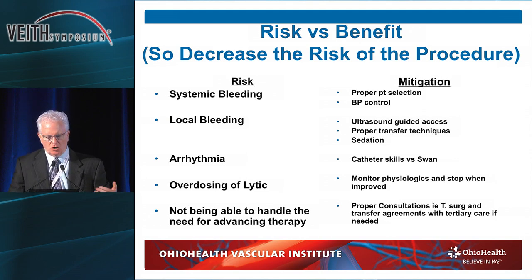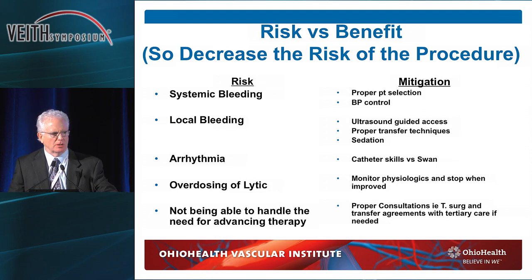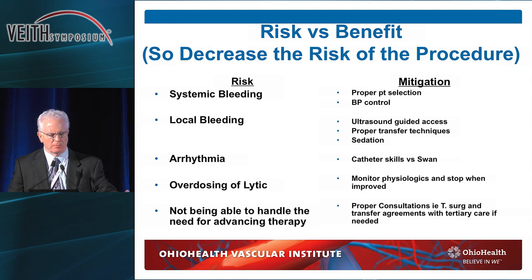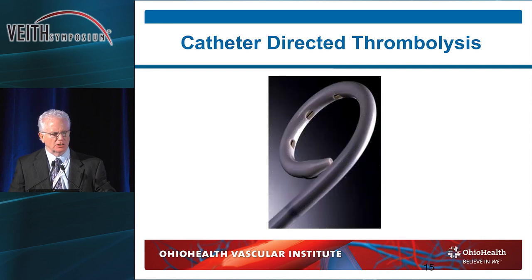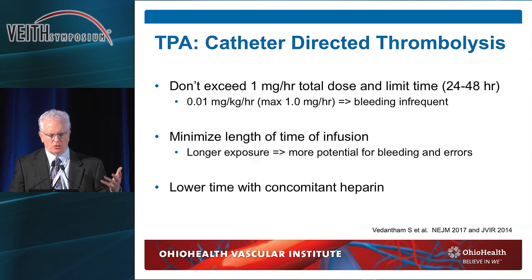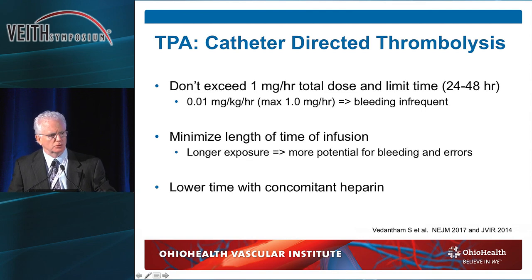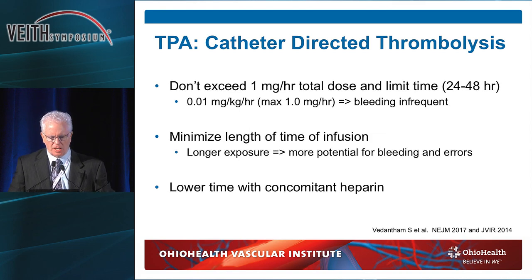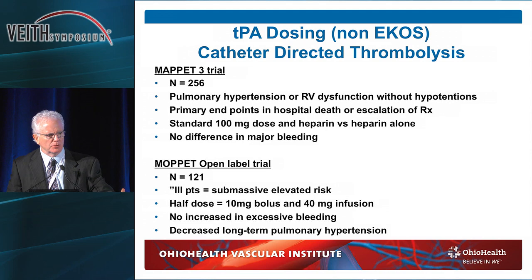If you get a patient who is massively ill and you give them systemic thrombolysis but don't have the ability to do other stuff, get them out of your hospital to a tertiary care center with thoracic surgery or thrombectomy capability. For catheter-directed thrombolysis, we usually don't want to exceed one milligram per hour. Minimize the length of infusion — longer exposures and higher dose lead to increased bleeding and medical errors. With concomitant full-dose heparin therapy, you really want to back off your infusion time if you can.